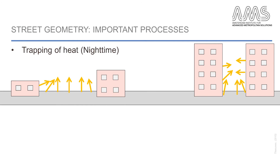When talking about the geometry of streets influencing urban temperatures, there are two important counteracting processes. First, there is the trapping of heat within the streets. In more open streets with low buildings, heat stored in pavement and buildings can more easily escape. Whereas in narrow streets with high buildings, this heat is trapped and can hardly escape. This process is of main importance during night time and enhances the urban heat island for streets with high height-to-width ratios.